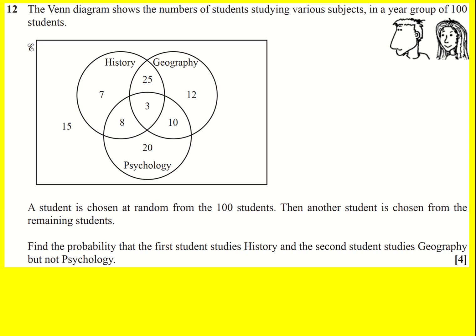So the wrong way to do this question is basically to add these up, which would be 43, and say it's 43 out of 100 that I get history. And then add up the ones from geography that don't do psychology—it's 37, but now it's over 99 because I've already found one person—and multiply those together. That is not correct.